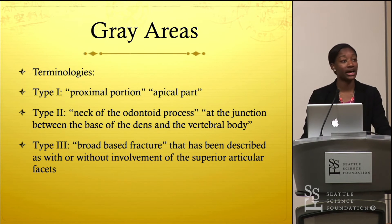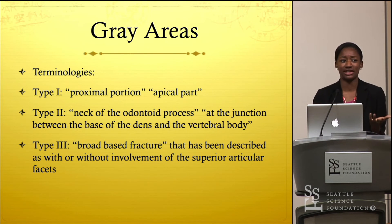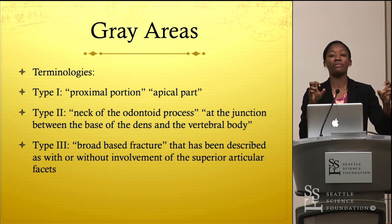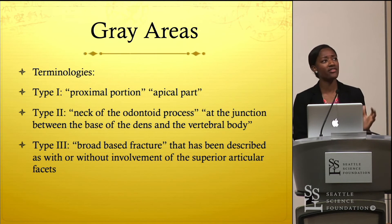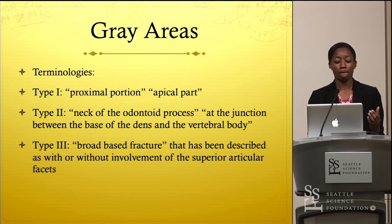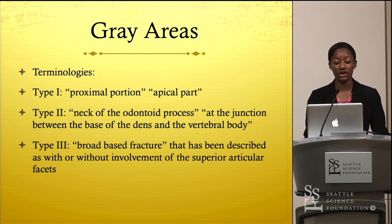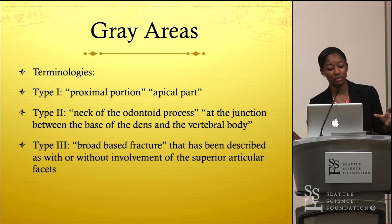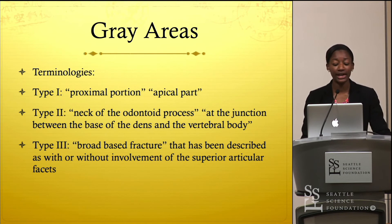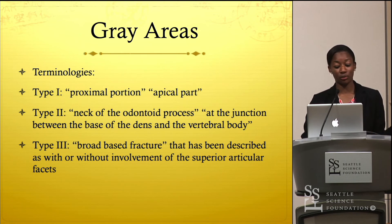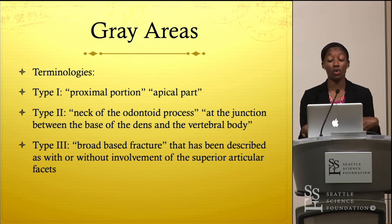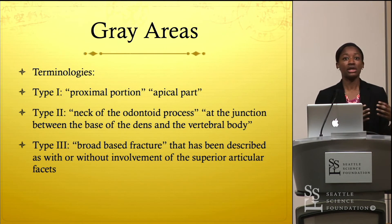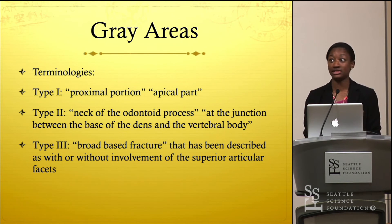For type 1 fractures, the location has been depicted as the proximal portion or the most apical part of the odontoid process — generally understandable, but at times ambiguous. Type 2 has been described as the neck of the odontoid process or at the junction between the base of the dens and the vertebral body — but where exactly is that junction, and how can we ascertain it's reproducible for each person? Type 3 has been depicted as a broad-based fracture, described as with or without involvement of the superior articular facets. What if a fracture extends through the vertebral body but does not involve the superior articular facet? Does it have to involve one or both?